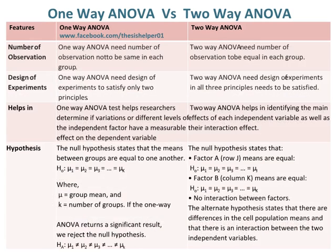One-way ANOVA does not require the number of observations to be the same in each group. Whereas two-way ANOVA requires the number of observations to be equal in each group. One-way ANOVA requires the design of experiments to satisfy only two principles, whereas two-way ANOVA requires all three principles of experimental design to be satisfied.